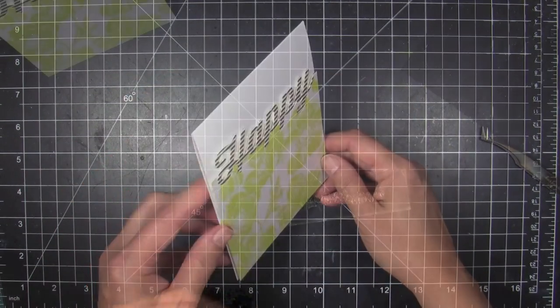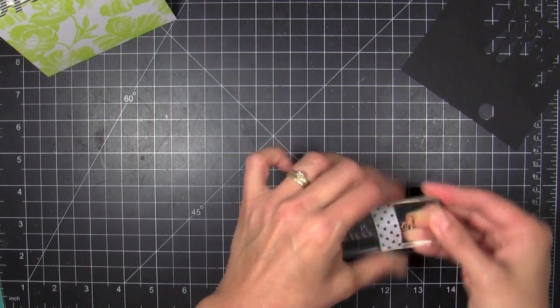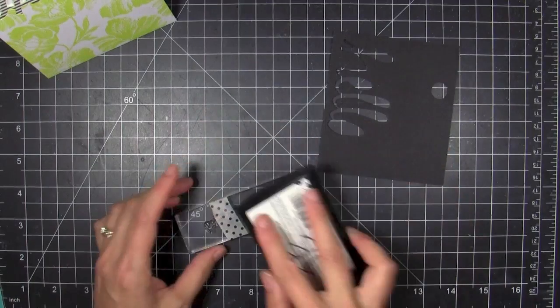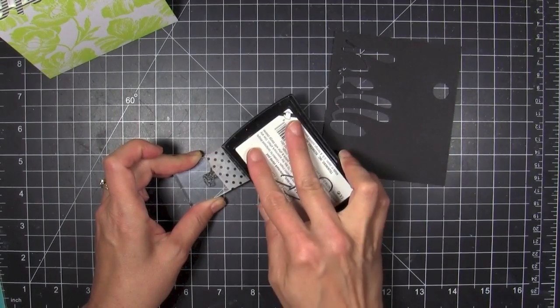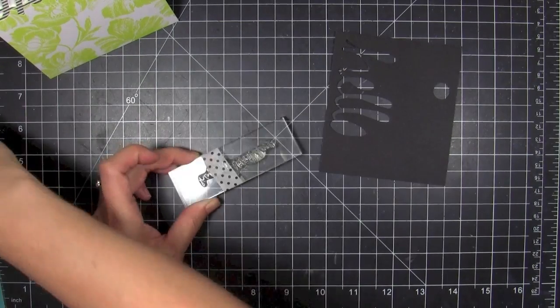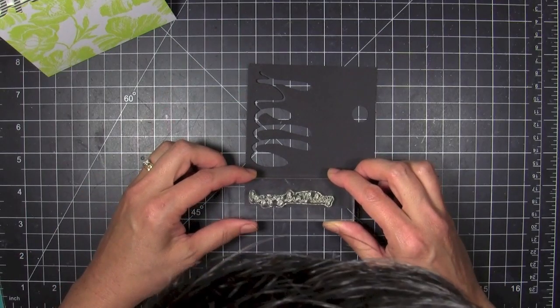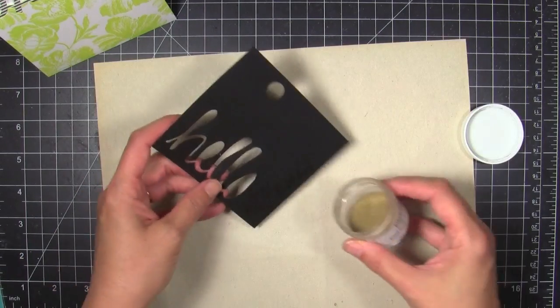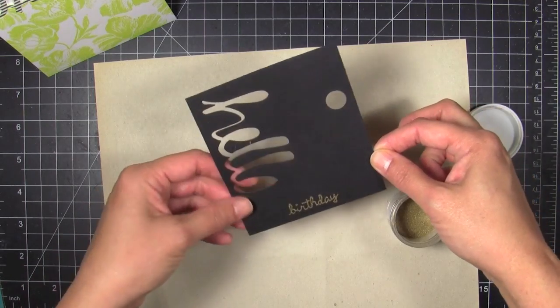Then to finish off the greeting I needed the word birthday. I borrowed a sentiment from Selfie Sentiments by Lawn Fawn. I love these tiny little words and I just masked off the word happy because I've already got that in the die cut. Then I can just ink up the word birthday with my Versamark ink pad. Then I have to remember to remove the tape when I go to stamp this so I don't end up with a big blob there on my black cardstock.